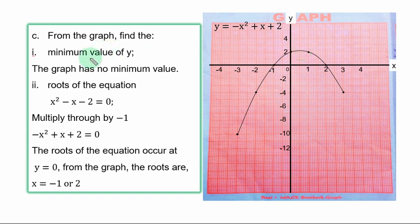From the graph, find (i) the minimum value of y. Anytime you plot a quadratic curve, you always have two shapes: the U shape and the N shape. The N shape, as you can see from this question, you can obtain maximum value from the N shape, and you obtain minimum value from the U shape. This curve is N shape. For that, the graph has no minimum value.